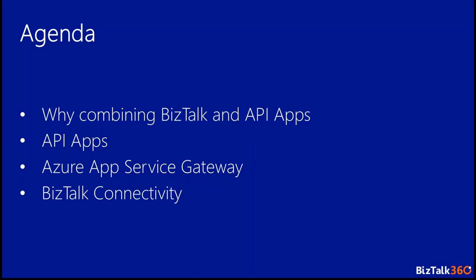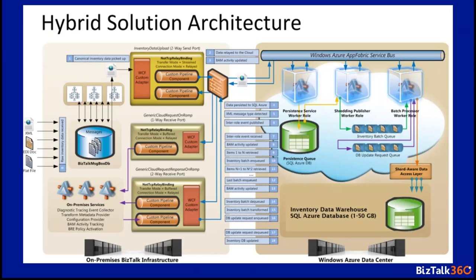I'll talk about the Azure App Service gateway, which is an important piece in the middle of the connectivity between BizTalk and API apps, and then about BizTalk connectivity — how BizTalk is going to connect back to our API apps. The first slide is an introduction to why mixing them. We continuously talk about hybrid solutions, mixing your on-premise infrastructure with Azure, and there are quite a few reasons for it.